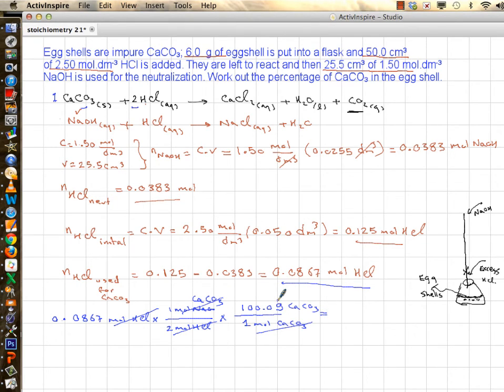And if you carry the calculation through you get 4.33 grams of calcium carbonate. That means this is how much calcium carbonate you have in your 6 grams of eggshell.